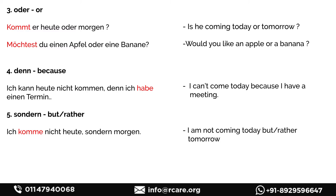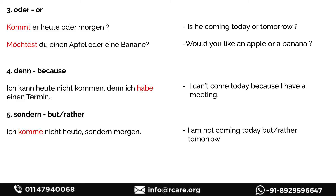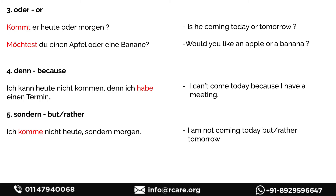'Oder' (or): 'Kommt er heute oder morgen?' — is he coming today or tomorrow? 'Möchtest du einen Apfel oder eine Banane?' — would you like to have an apple or banana? Next example is 'denn' (because): 'Ich kann heute nicht kommen, denn ich habe ein Meeting' — I can't come today because I have a meeting.